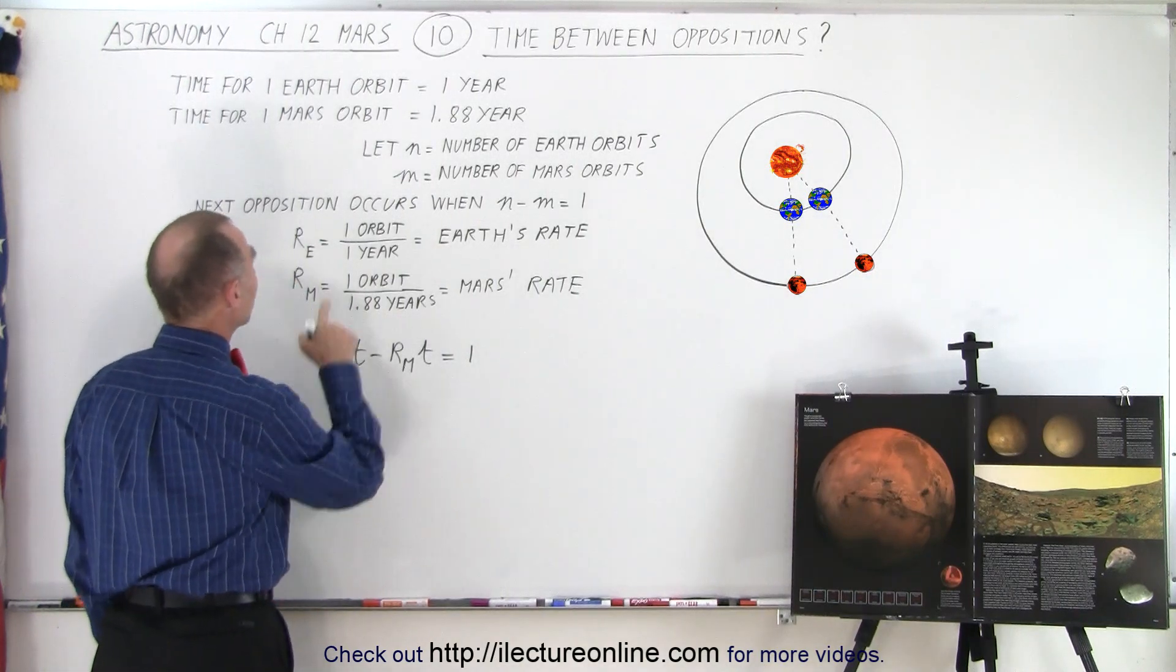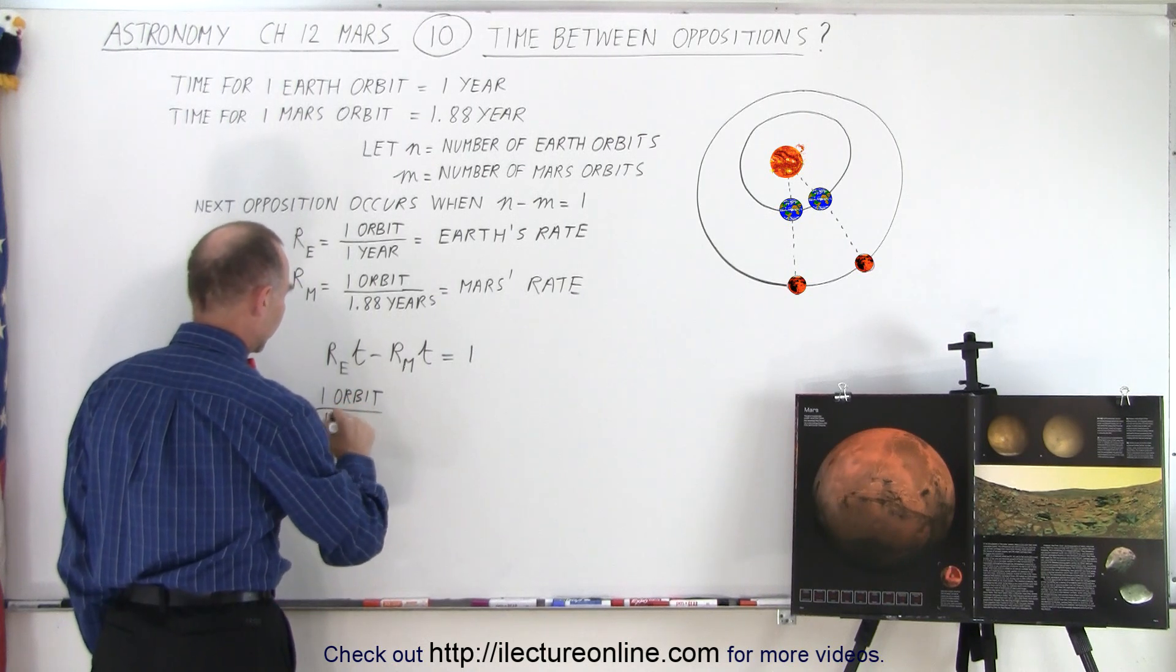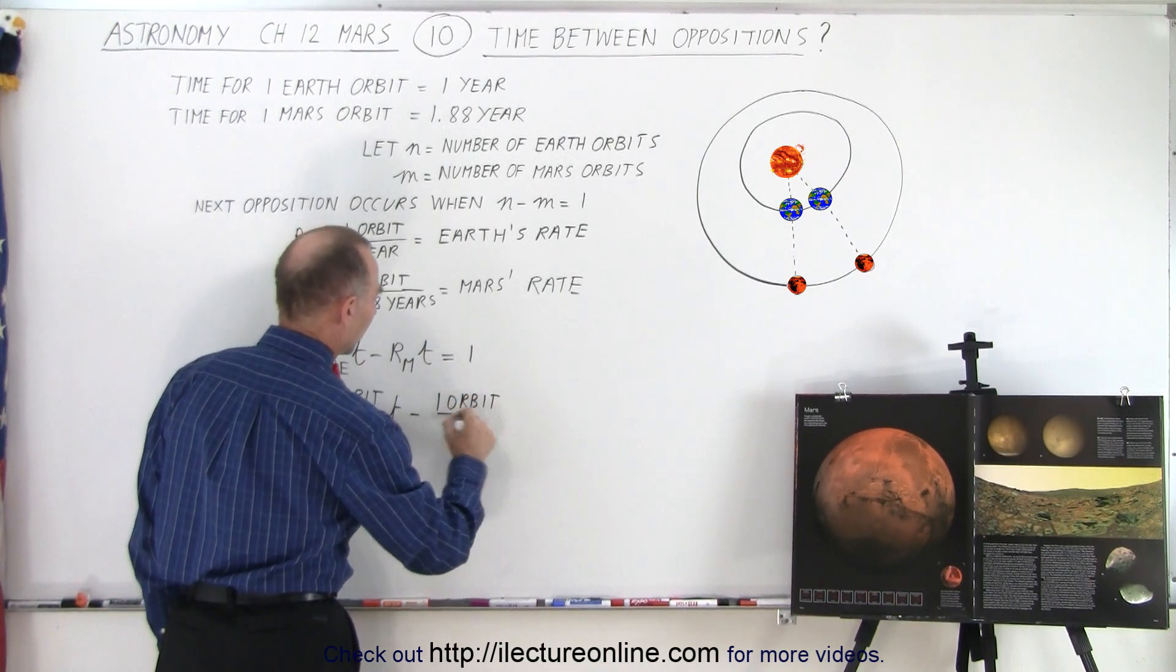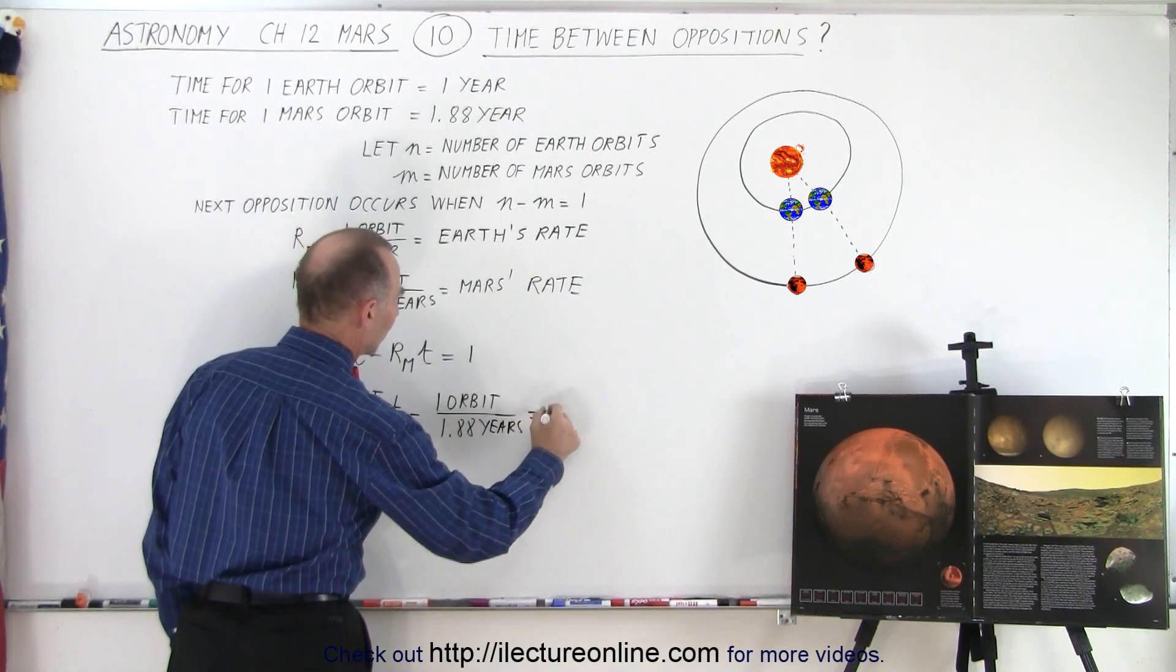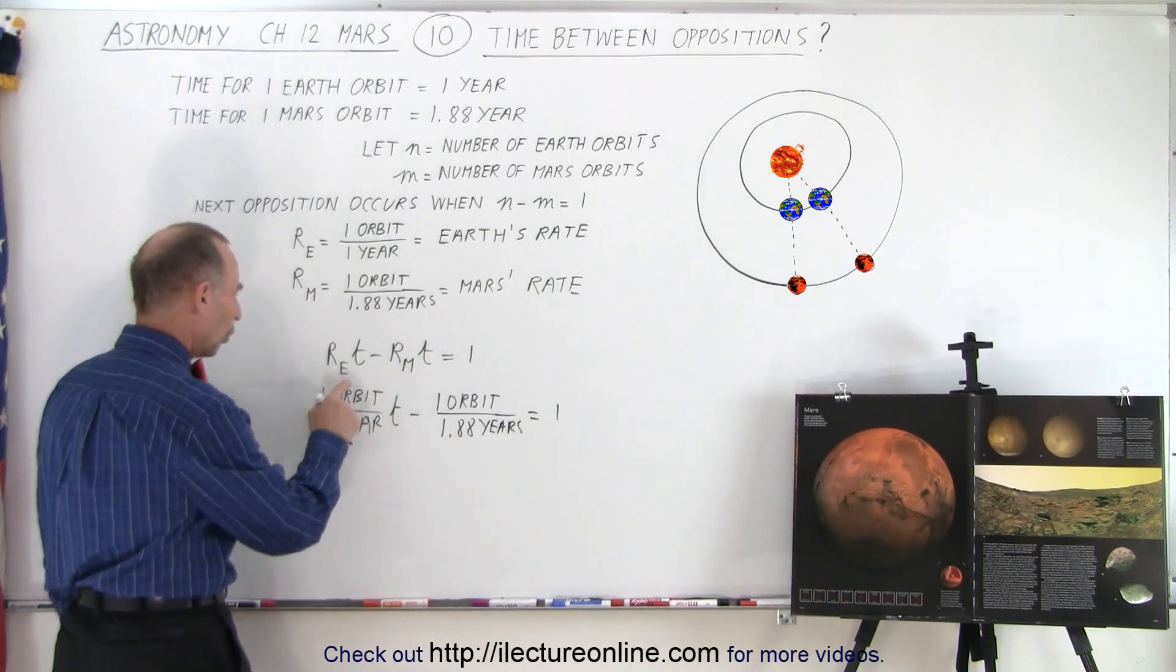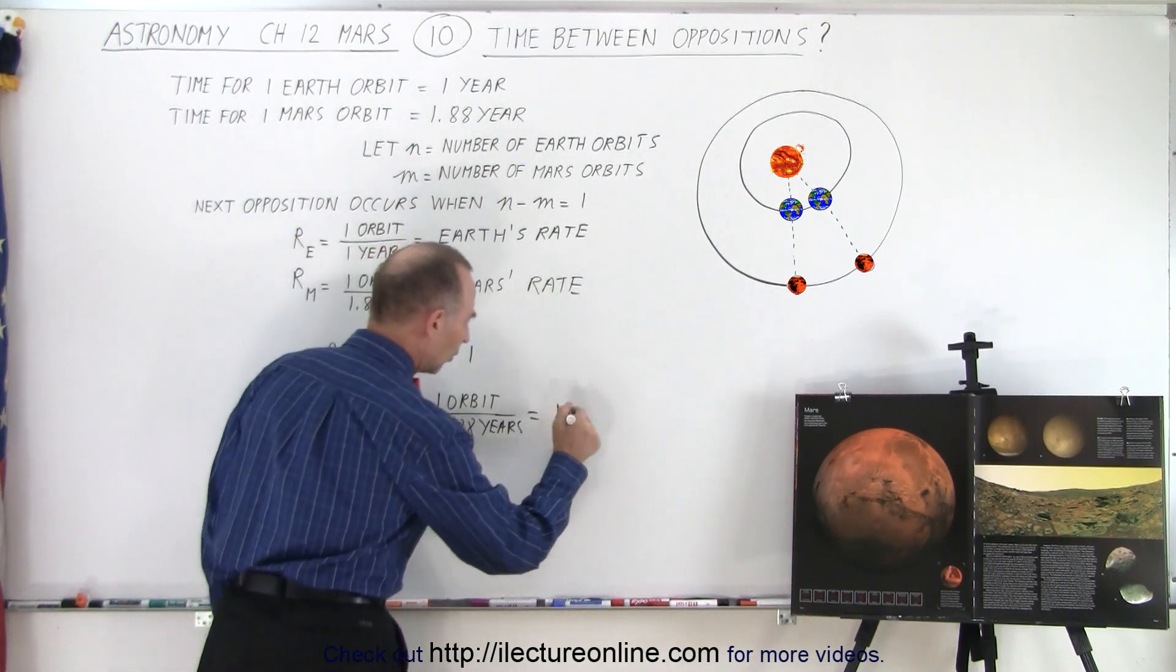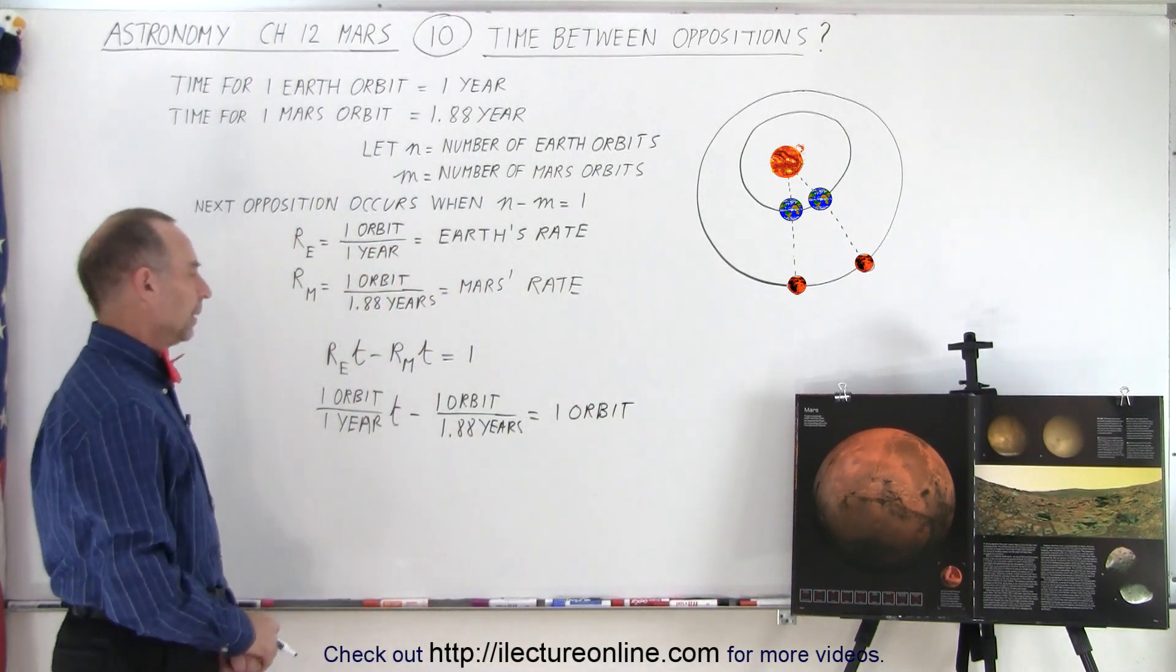So let's plug in the equation. r sub e is one orbit per year, so that's one orbit per one year, times time minus the rate of Mars, which is one orbit per 1.88 years, and that is equal to 1. Now notice we have orbit per year times time. Now time will be in years, so years will cancel out, so we're left with orbit. So this should be one orbit if we're going to put in the proper units.